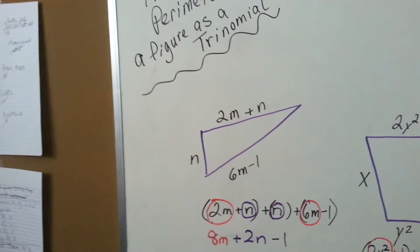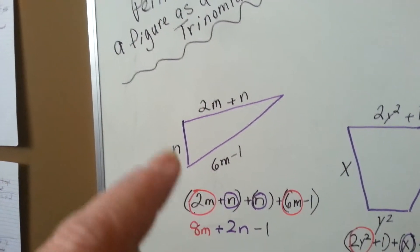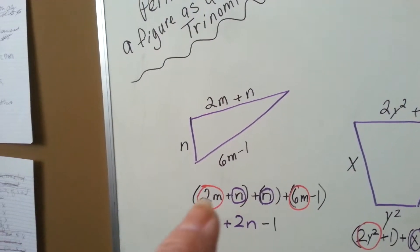This is separate, this is separate, and this is separate. So we have 2m plus n right here. We have the n, and we have the 6m minus 1. Now we're going to combine like terms.